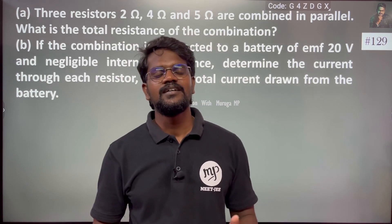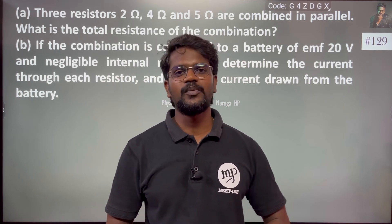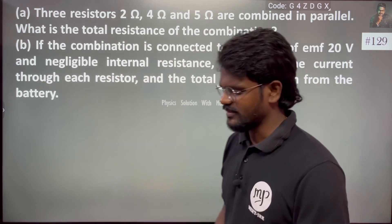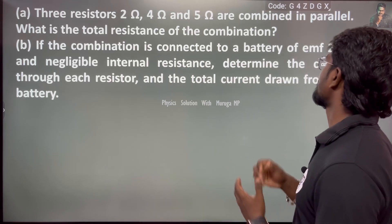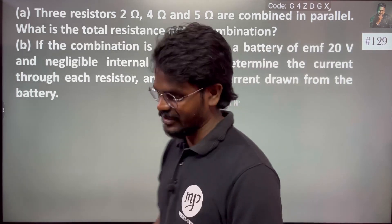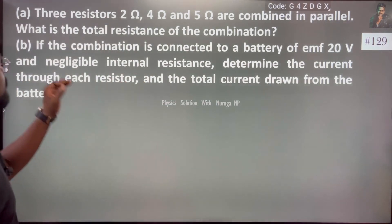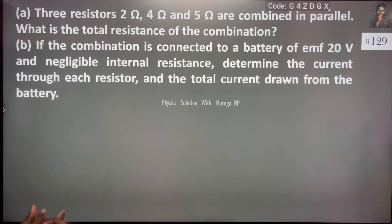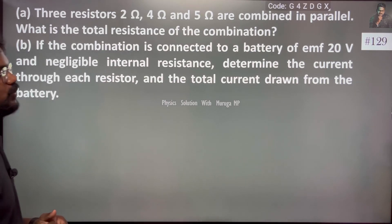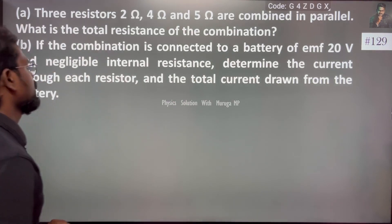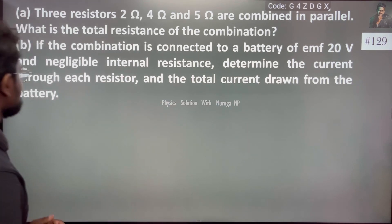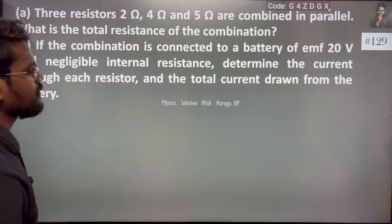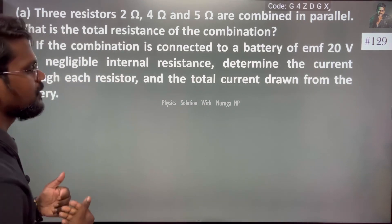Hi everyone, in this 129th question, three resistors 2Ω, 4Ω, and 5Ω are combined in parallel. What is the total resistance of the combination? Part b: If the combination is connected to a battery of EMF 20 volts and negligible internal resistance, determine the current through each resistor and the total current drawn from the battery.